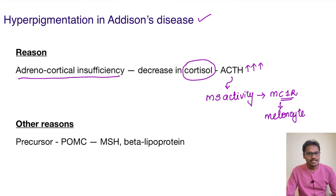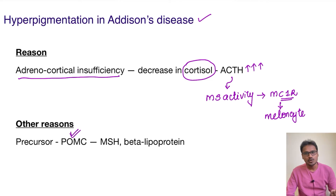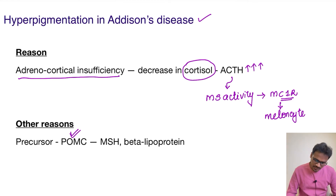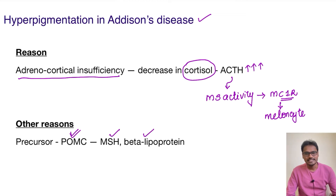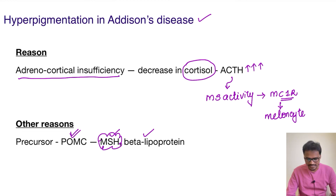Another reason is that since there is no negative feedback inhibition, the precursor of ACTH — POMC, that is pro-opiomelanocortin — is also raised. POMC is divided into MSH, beta-lipoprotein, and ACTH. MSH is the melanocyte stimulating hormone, so there is raised pigmentation due to this POMC increase as well.